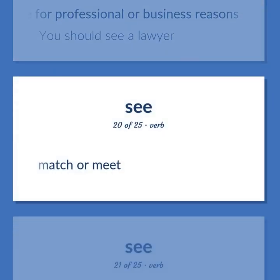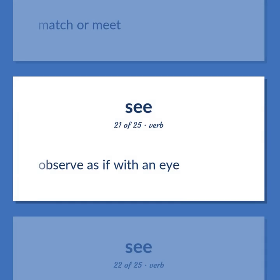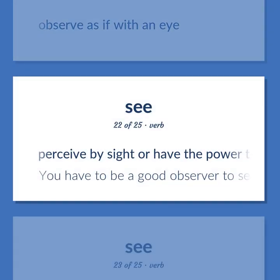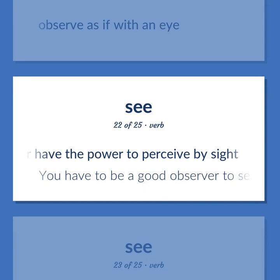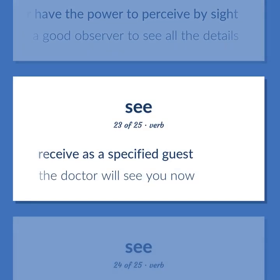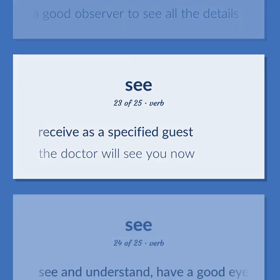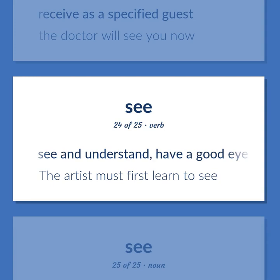Match or meet. Observe as if with an eye. Perceive by sight or have the power to perceive by sight. You have to be a good observer to see all the details. Receive as a specified guest. The doctor will see you now. See and understand, have a good eye. The artist must first learn to see.